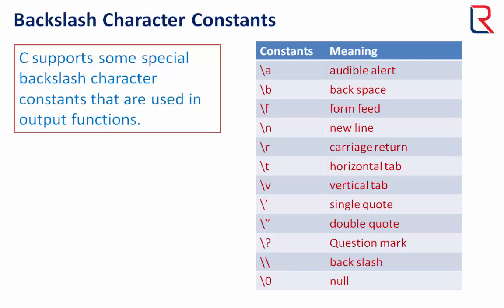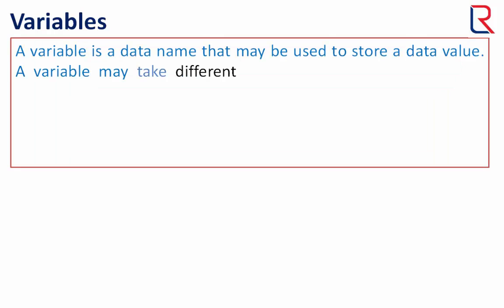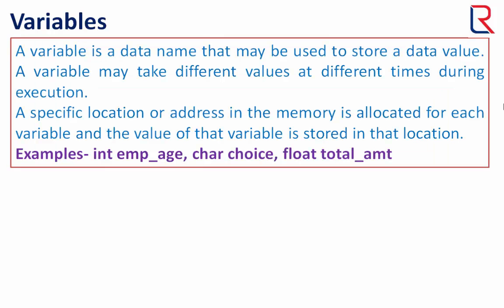Now this is time for variables. A variable is a data name that may be used to store a data value. A variable may take different values at different times during execution. A specific location or address in the memory is allocated for each variable, and the value of that variable is stored in that location.